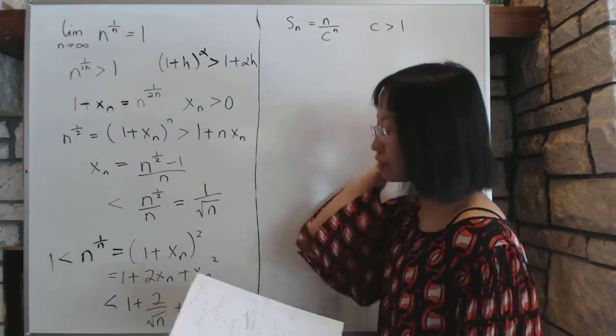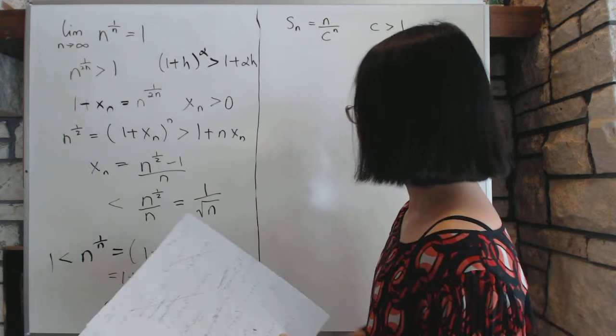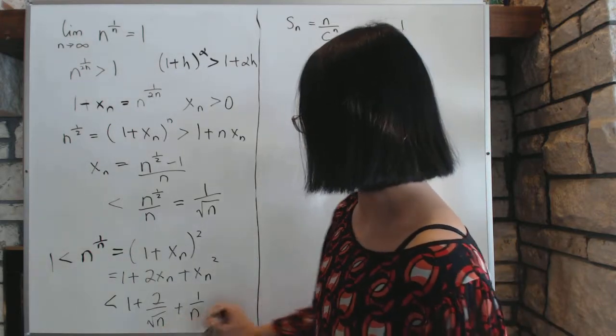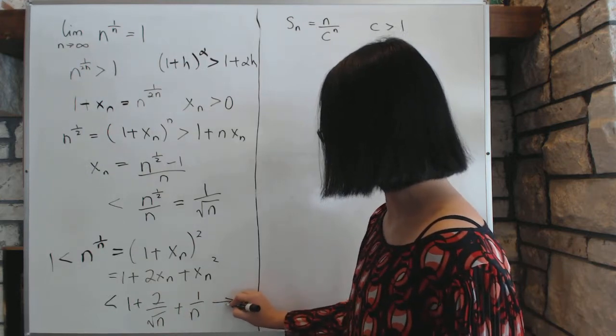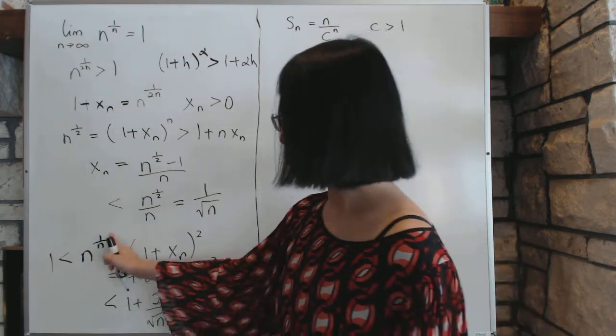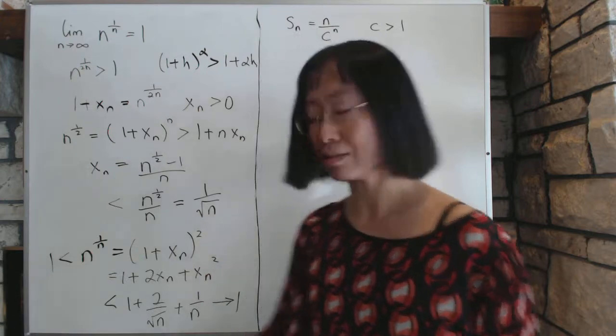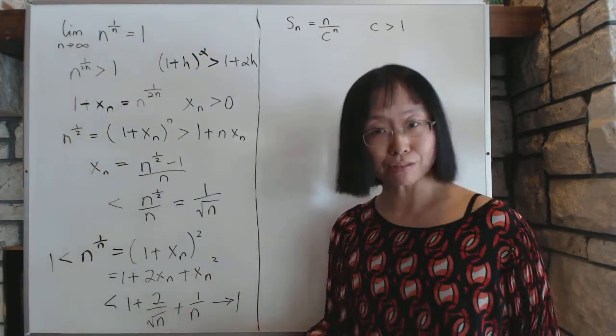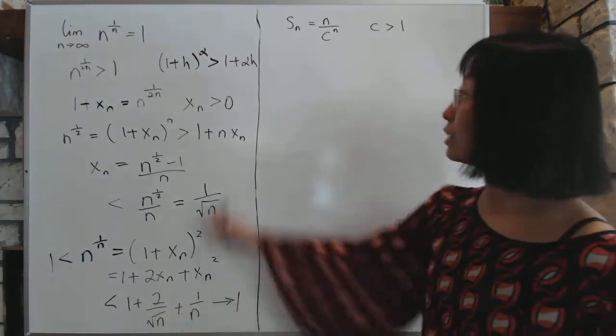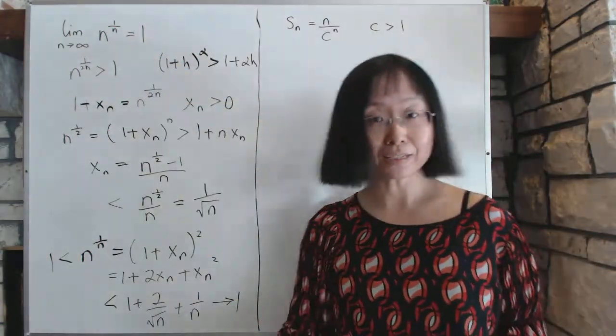In any case, so what does that tell you? As n goes to infinity, this part disappears into 0, so this whole thing will go to 1. Now, n to the power of 1 over n is already bigger than 1 to start with, and it's bounded by something that goes to 1, so by the squeeze theorem, the limit, this particular limit, goes to 1.